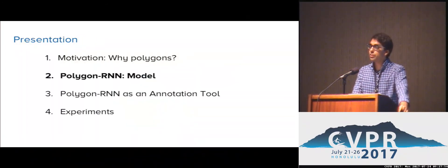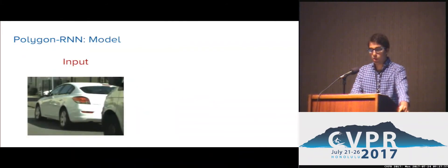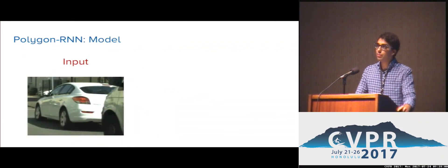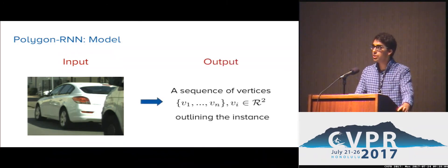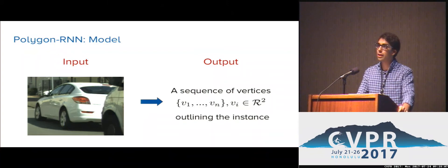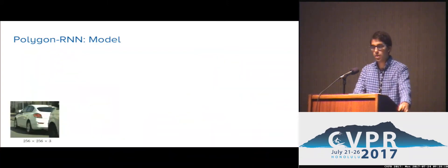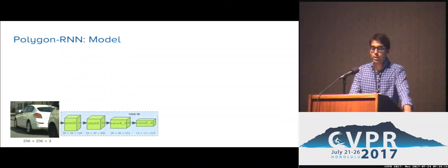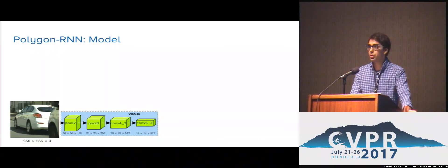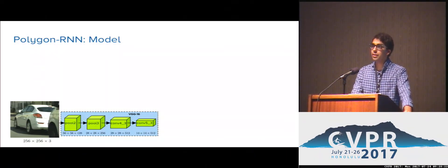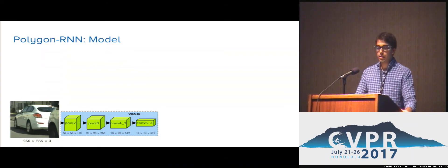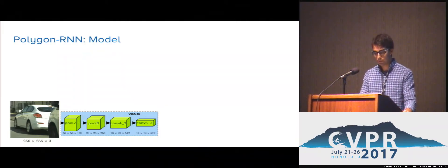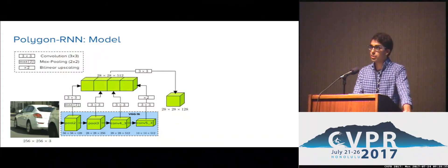Now I'm going to explain the details of the Polygon RNN model. Our problem is the following: we are given a bounding box with a centered instance, and our goal is to predict a sequence of vertices that describes a polygon outlining this instance. We first want to extract some image features for the bounding box. In this work, we use a VGG16 convolutional neural network pre-trained on ImageNet. To correctly outline the instance, we need both high-level information indicating which image regions belong to different object categories, as well as low-level information indicating edges and borders. Therefore, we use skip connections that fuse together features coming from different levels in the CNN hierarchy.